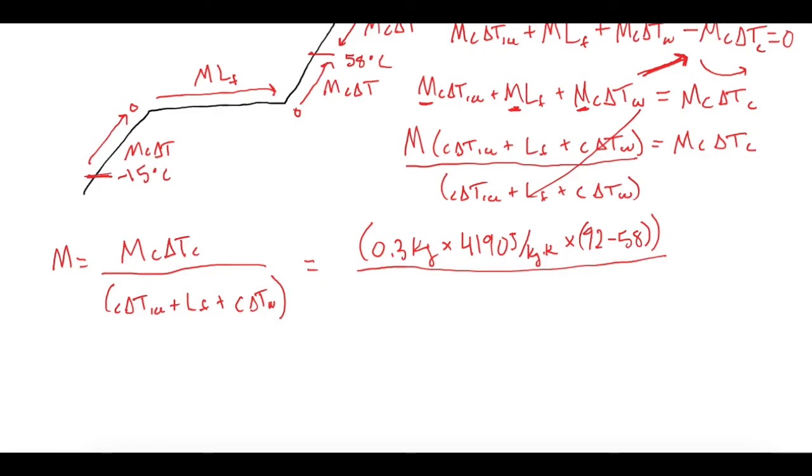So now all of that divided by, and that will be in Kelvin, so that divided by C of the ice, which is 2090, times the change in temperature of the ice, which is 15 to zero, so that will be 15 Kelvin. And then we're going to add that to the latent heat of fusion, which from your constants page is 3.33 times 10 to the fifth. And then add finally C delta T for the water, which is 4190, times the change of temperature for the water, which is 58 Kelvin.